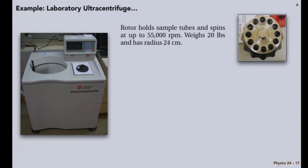This is a laboratory ultracentrifuge. The rotor, which is shown at the right, holds a bunch of tubes and will spin around at speeds up to 55,000 revolutions per minute, which seems high to me, awfully fast. The whole rotor weighs about 20 pounds and has a radius of about 24 centimeters. So from here to there, about 24 centimeters.